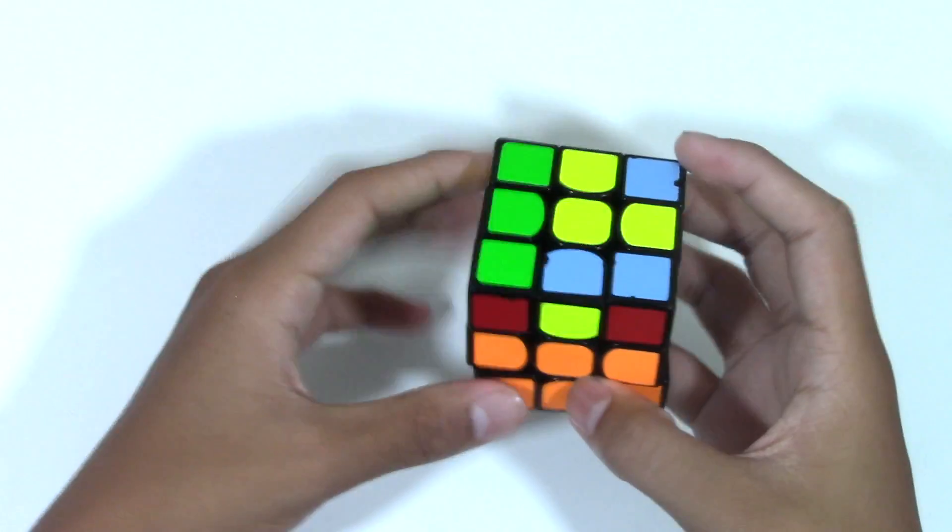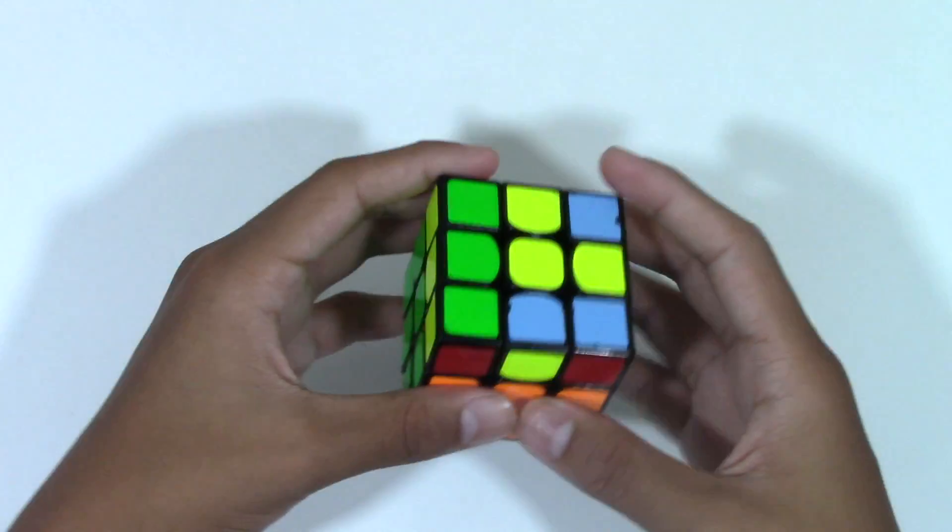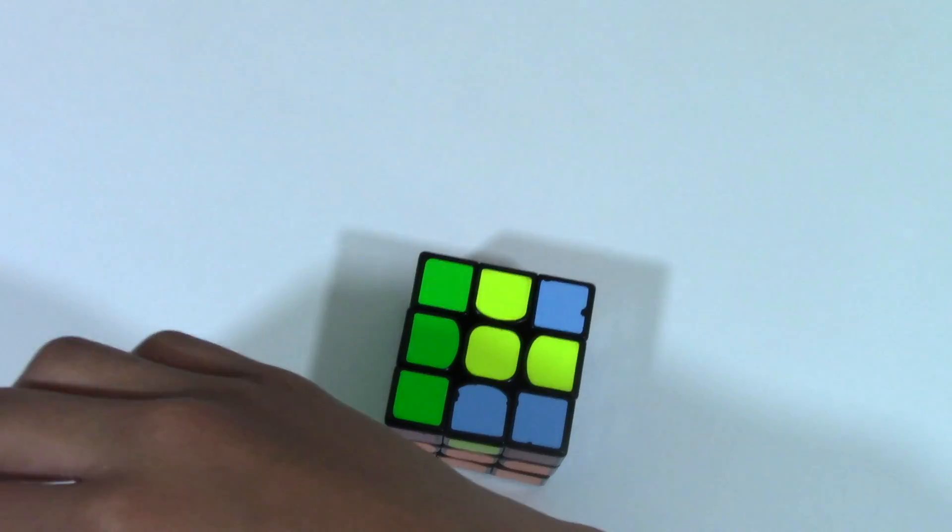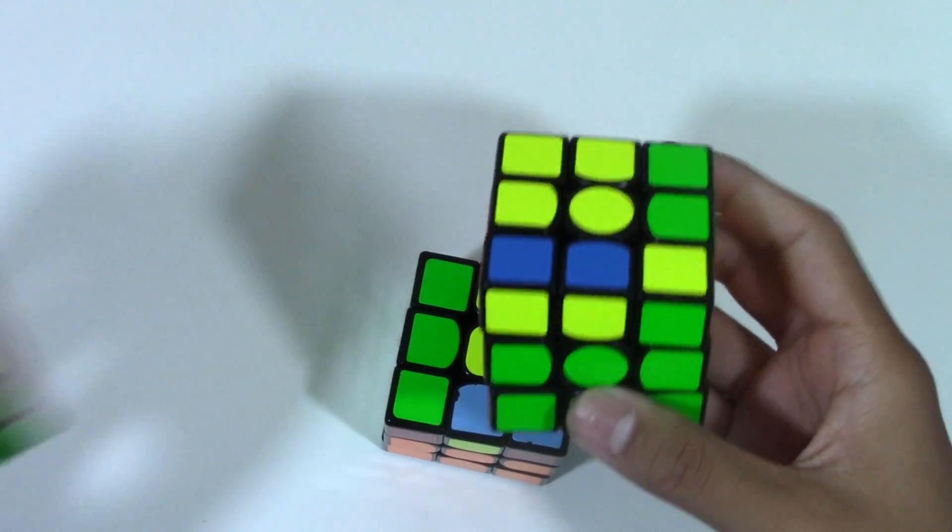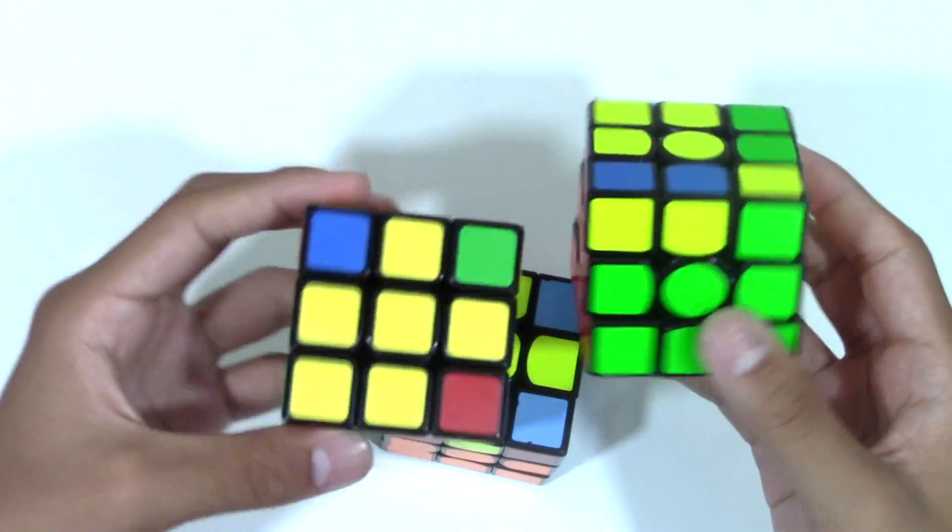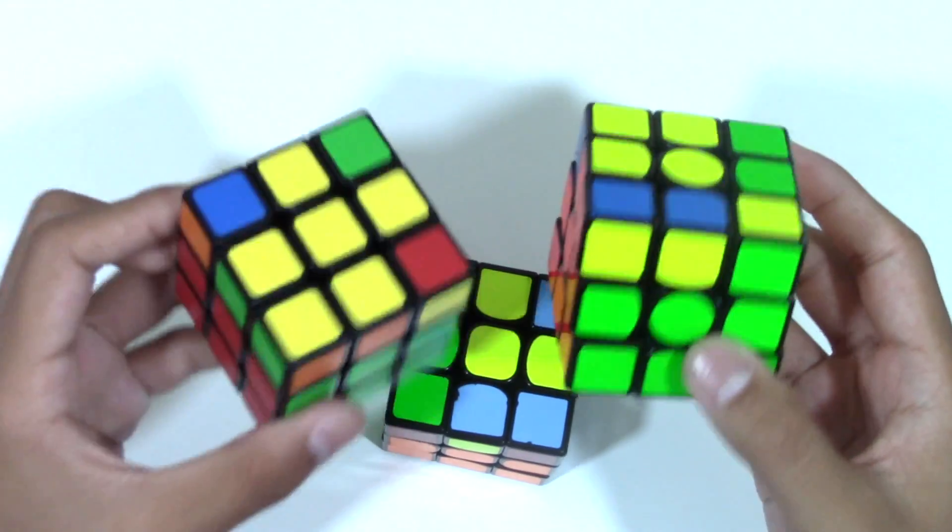So basically, yeah, it's easy to recognize as well, but how you solve this one, it's just a combination of these two OLLs or slash COLL, OLCP cases. So it's really easy.